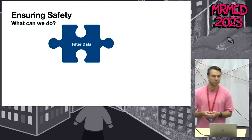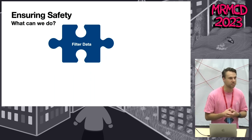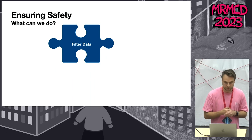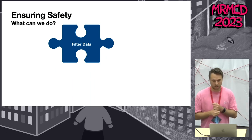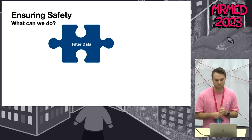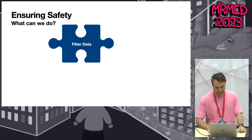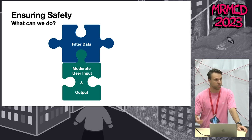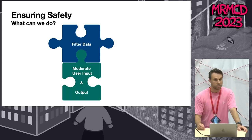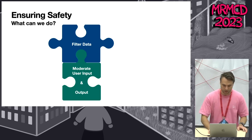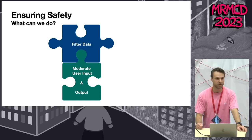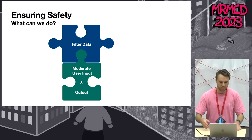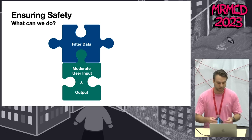One mitigation step is filtering data, though it may not always be the right approach. It's quite expensive — we have to annotate the data and create models for different applications. Another option is checking user input and model output after deployment; for example, Stable Diffusion displays a black image if nudity is generated. However, inappropriate content depends on context, and banning specific words may also restrict appropriate content.